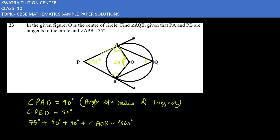The total sum is 360. Now what you will do is find AOB. 90 and 90 add, it will be 180. 180 and 75 add, it will be 255. So you will subtract 255 from 360.